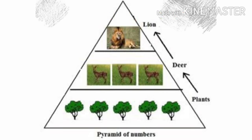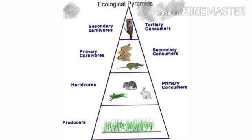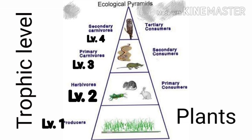In a grassland, various grasses, shrubs, and herbs form the first trophic level of producers. The second trophic level includes herbivores like insects, rabbits, and deer. The third trophic level is made up of snakes and frogs feeding on herbivores. Finally, the top trophic level consists of top carnivores like eagles and birds feeding upon snakes and frogs.